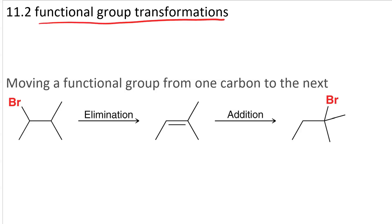Functional group transformations. To move a functional group from one carbon to the next, we need to first do elimination, followed by addition. We need to pay attention to our regiochemical constraints in each step.